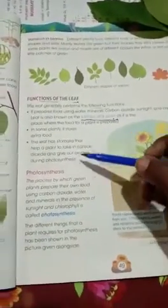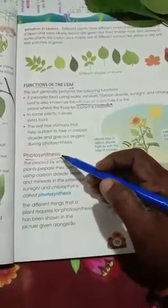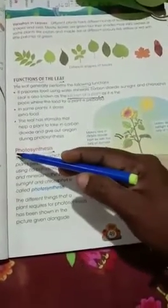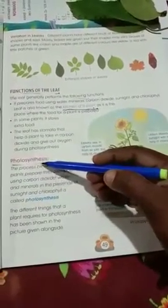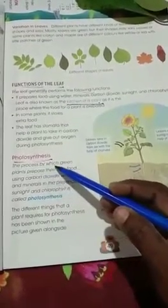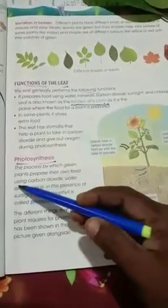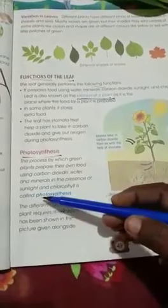The byproduct of the food-preparing process is oxygen. Next is photosynthesis. The spelling is P-H-O-T-O-S-Y-N-T-H-E-S-I-S. Photo means light. The process by which green plants prepare their own food using carbon dioxide, water, and minerals in the presence of sunlight and chlorophyll is called photosynthesis.